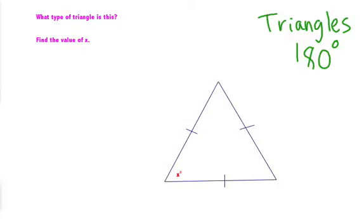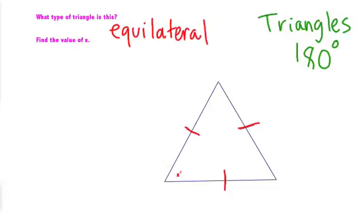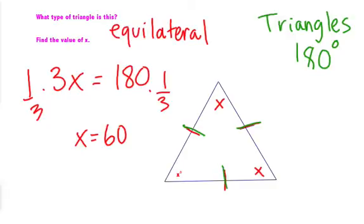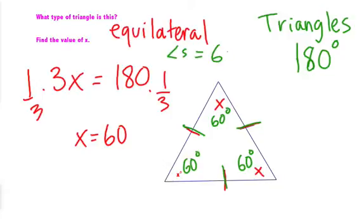What type of triangle is this? All three sides are the same, so this is an equilateral triangle. Just like the base angles were equal on isosceles, in this case all three angles are equal. So three x equals 180, which gives us x equals 60. As soon as you see that all three sides are the same, you instantly know each angle is 60 degrees — it's always 60 degrees. Equilateral triangles always have angles of 60 degrees; there's no other possibility if the triangle adds up to 180.